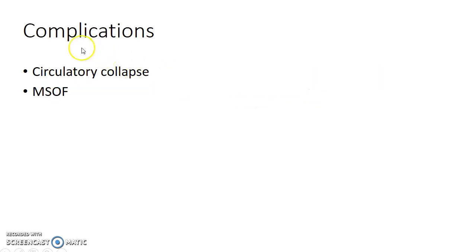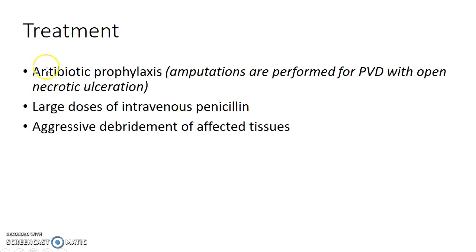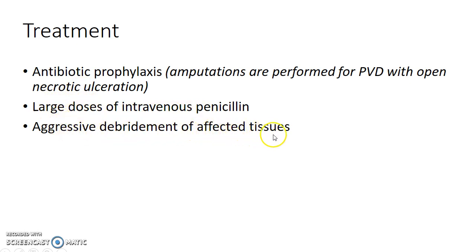What are the complications of gas gangrene? If gas gangrene is not treated properly, it can lead to circulatory collapse and multi-system organ failure. Treatment requires antibiotic prophylaxis to prevent gas gangrene in patients at risk, especially when amputations are performed for peripheral vascular disease with open necrotic ulceration. Once a patient develops gas gangrene, he should be treated with large doses of intravenous penicillin and aggressive debridement of affected tissues should be done.